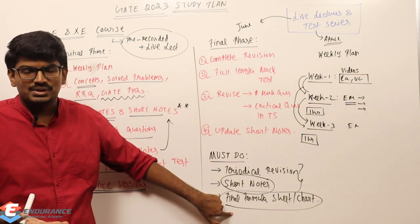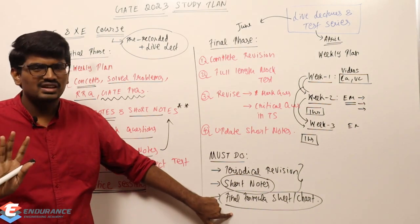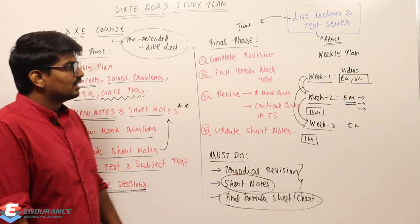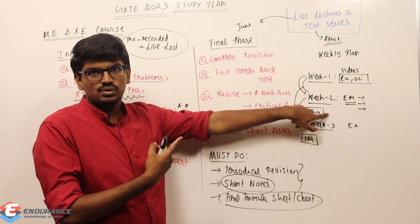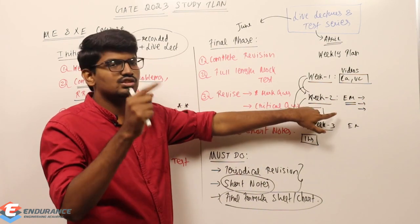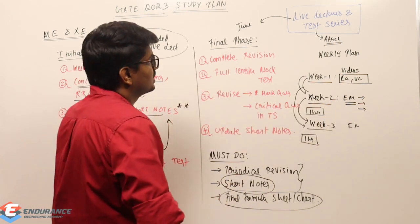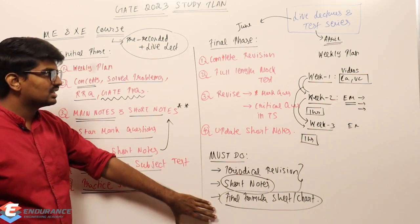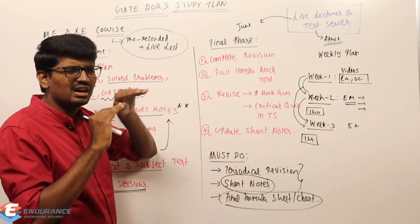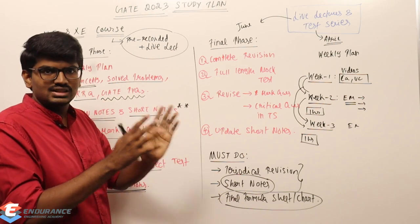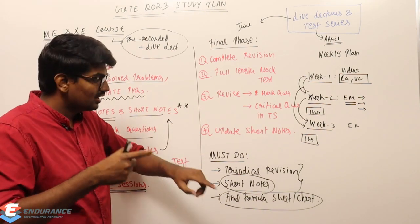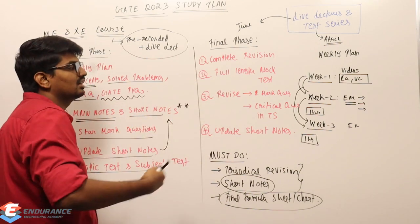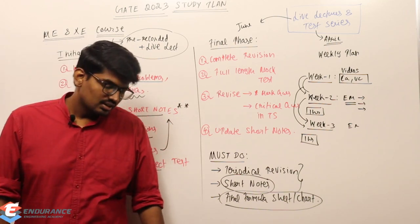Make the formula chart before going for full-length mock tests. After completing the initial phase, before entering the final phase, revise everything — your main notes, star-mark questions, short notes, updated short notes — and write down formulas you feel you will forget easily. Don't write basic ones like density equals mass by volume. Write the ones you might forget, stick the formula chart before your study table. After writing a mock test, re-analyze it and update short notes with any new learning.